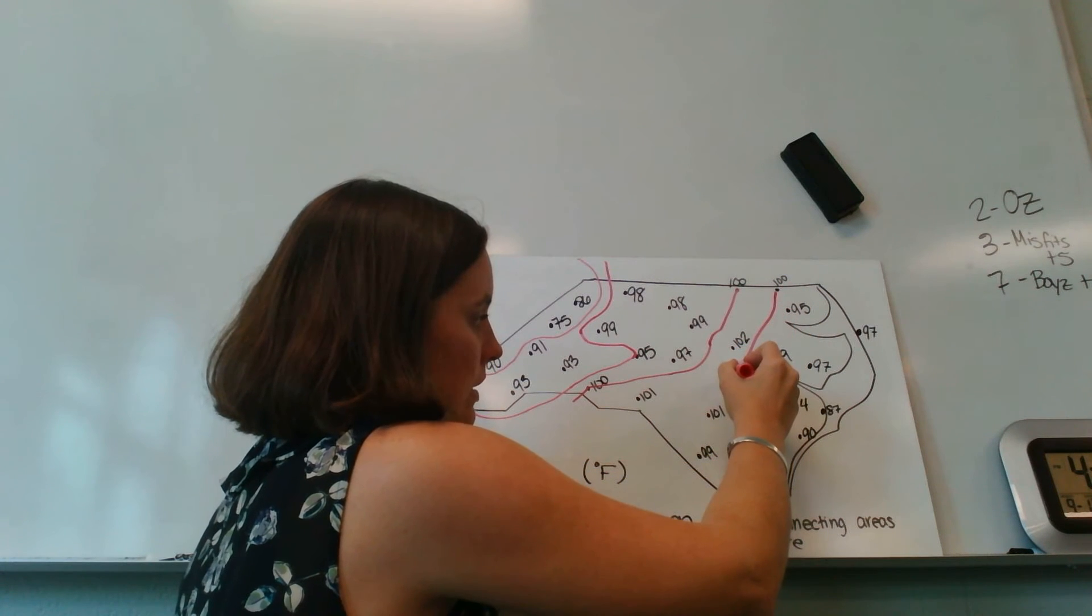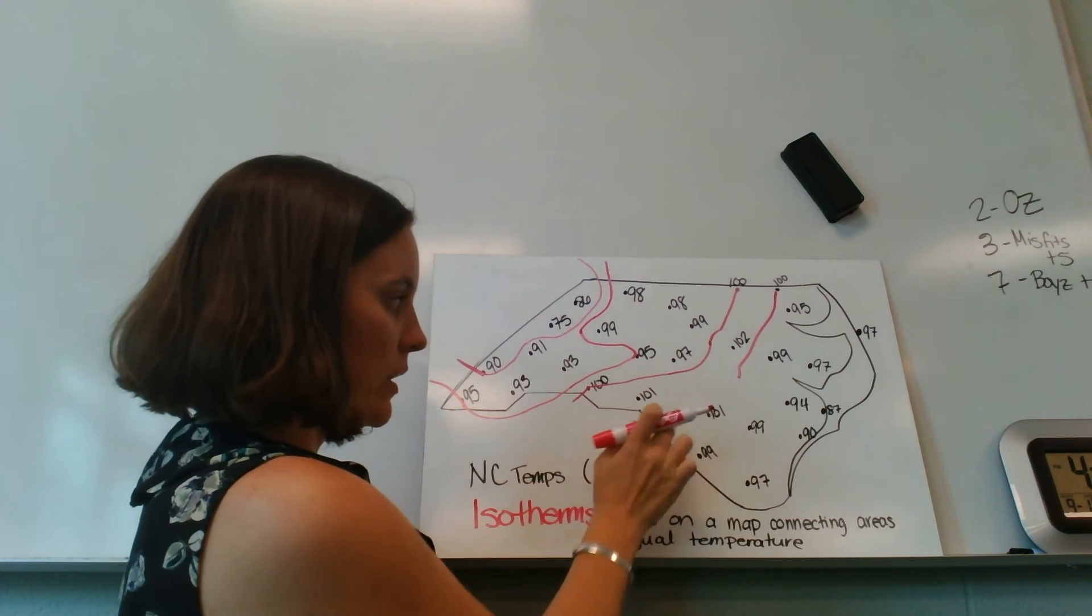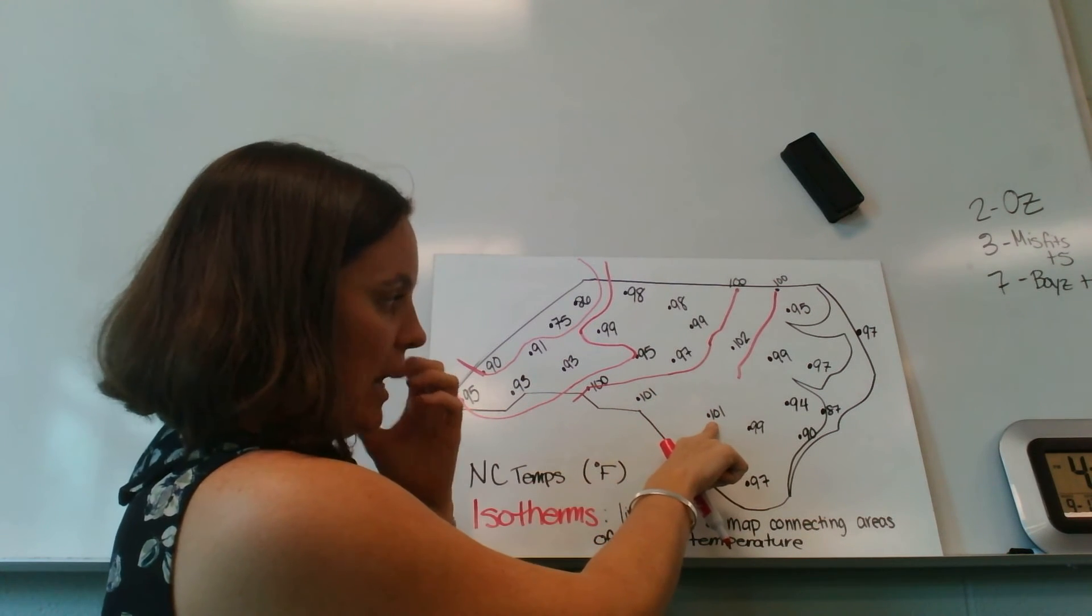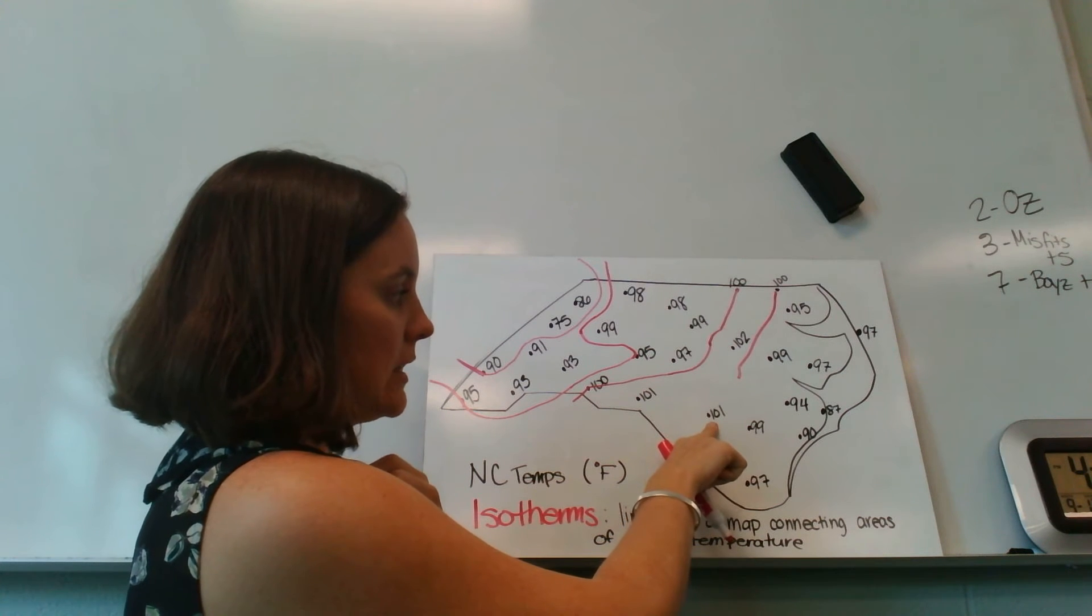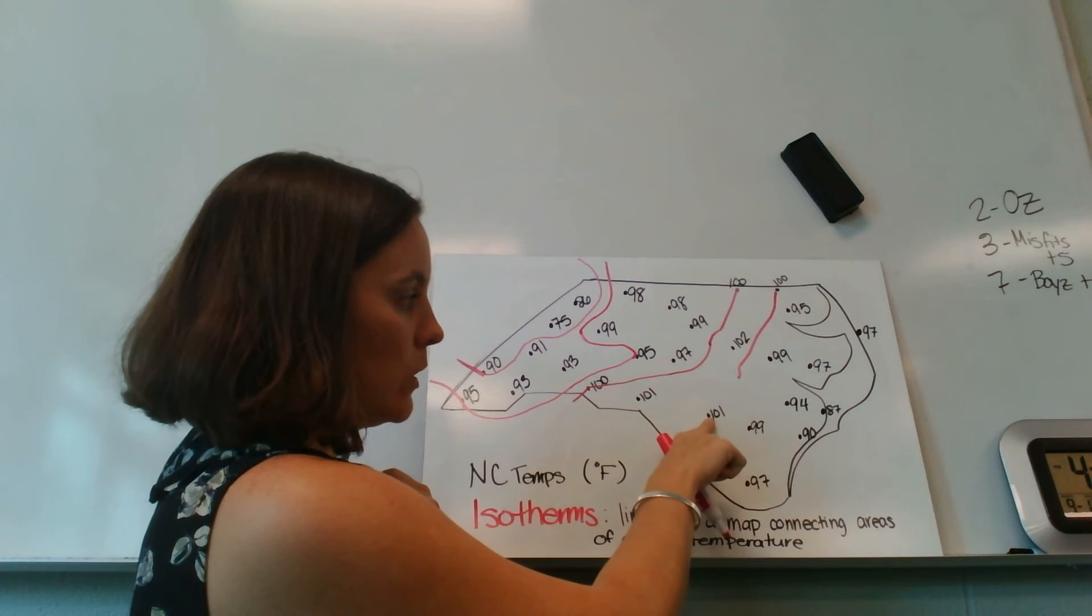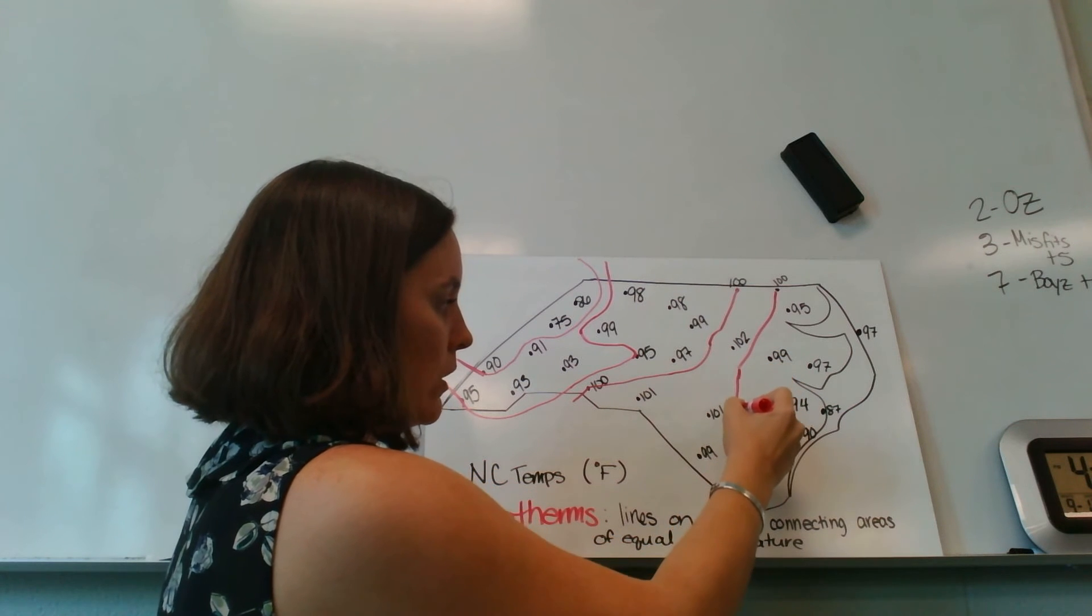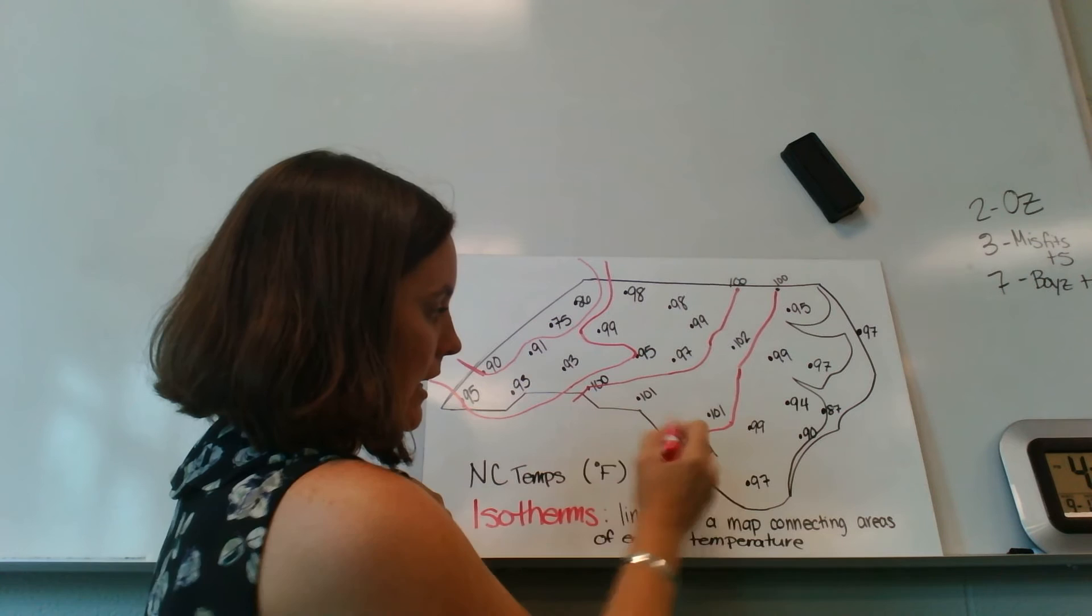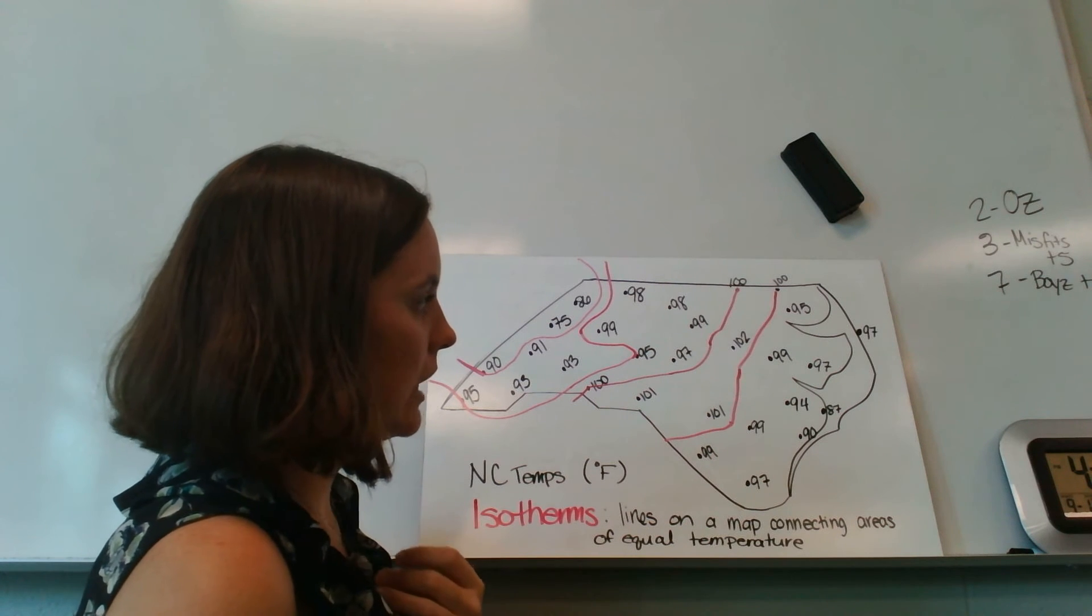I can't go here because that's 101 and 101. And we know that 100 is not equal to 101, but it's less than. So it's between 101 and 99. So I go between 101 and 99. And then I would have to go between 101 and 99 again. So I have another 100 degree isotherm.